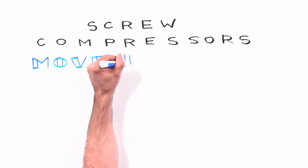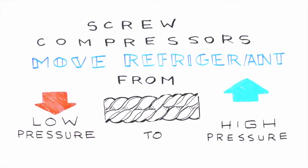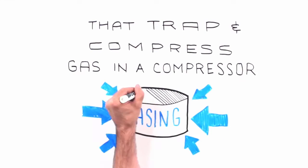Screw compressors move refrigerant from low pressure to high pressure via two rotors or screws that trap and compress gas in a compressor casing.